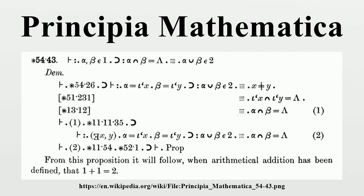1.2, p V p implies p, primitive proposition, principle of tautology. 1.3, q implies p V q, primitive proposition, principle of addition. 1.4, p V q implies q V p, primitive proposition, principle of permutation. 1.5, p V (q V r) implies q V (p V r), primitive proposition, associative principle. 1.6, If q implies r, then p V q implies p V r, primitive proposition, principle of summation.